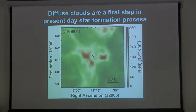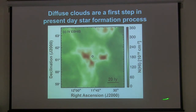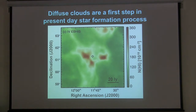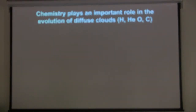Let me start with diffuse clouds. This is an image on the sky of a diffuse cloud, plotted in terms of declination and right ascension. What's being plotted is the neutral hydrogen column density — that's atomic hydrogen, or in spectroscopic notation, H1. This is basically number density integrated along the line of sight, so it has units of one over area. These red regions are diffuse clouds, and here's the scale — these are about 20 light years in size.